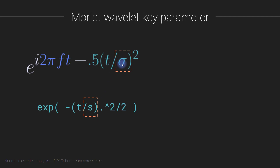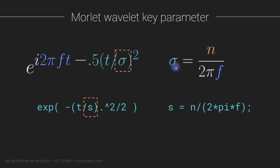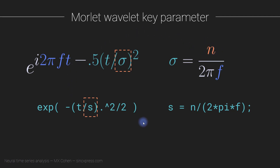This sigma is actually not the parameter itself. The key parameter is this variable n — a normalization factor: n divided by 2 pi f, where f is the same frequency used for the sine wave. This n character, which you can see in the code, is often called the number of cycles — that's why it's n. So this is one way to define a Morley wavelet.